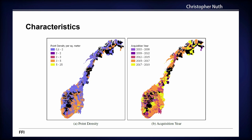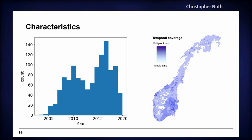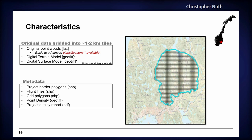There's also a temporal component. Although the project didn't start until 2016, data from as far back as 2003 is now available. This is quite interesting because you can start thinking about change detection and comparing over time. Looking at the histogram of projects, there's quite a lot of data from before 2016. Areas with darker shading on the map have more temporal coverage, and it's concentrated where people live.